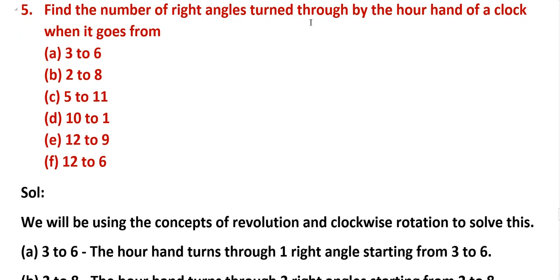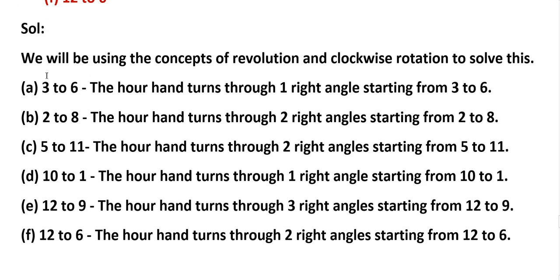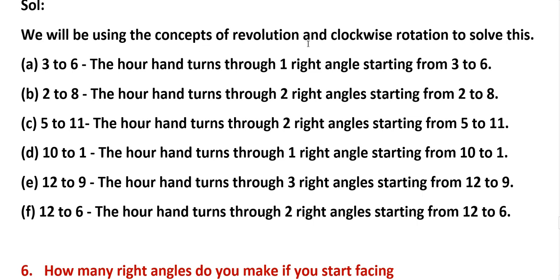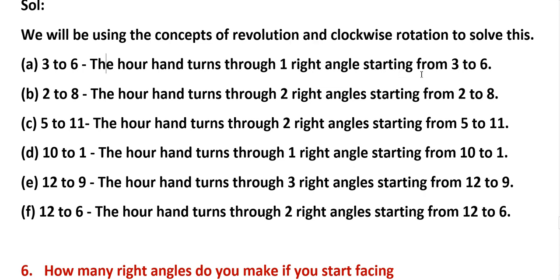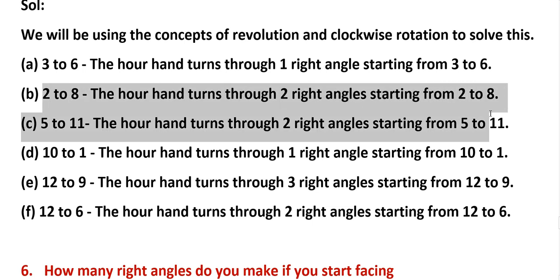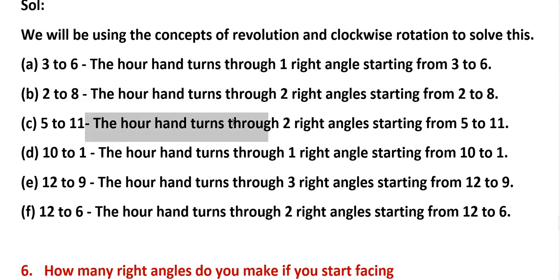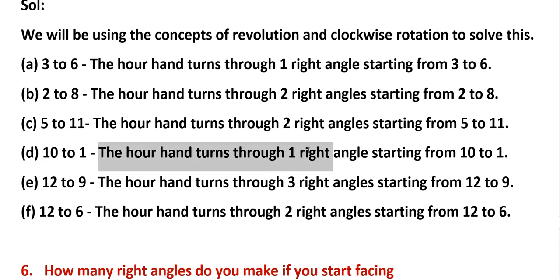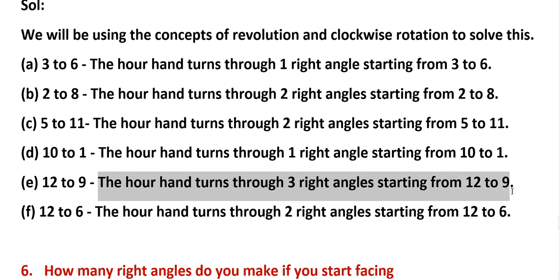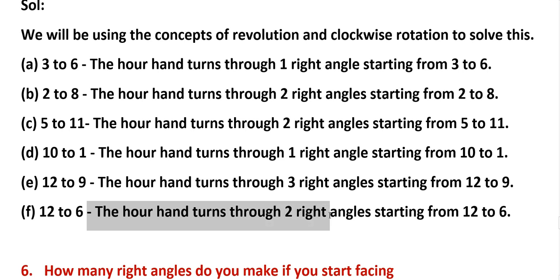Fifth problem: find the number of right angles turned through by the hour hand of a clock. A: from 3 to 6 — the hour hand turns through one right angle. B: from 2 to 8 — the hour hand turns two right angles. C: from 5 to 11 — the hour hand turns two right angles. D: from 10 to 1 — only one right angle. E: from 12 to 9 — three right angles, because three-fourths rotation. F: from 12 to 6 — two right angles, half rotation.